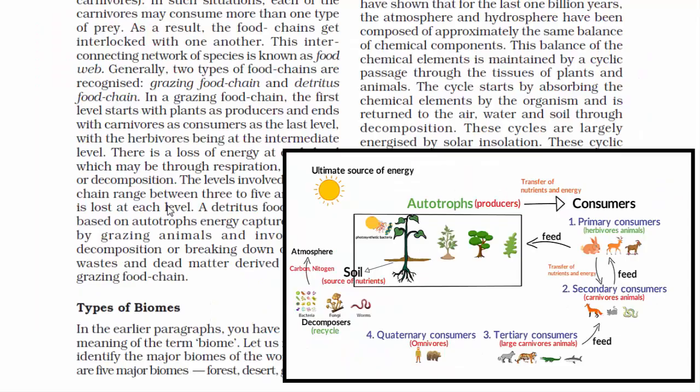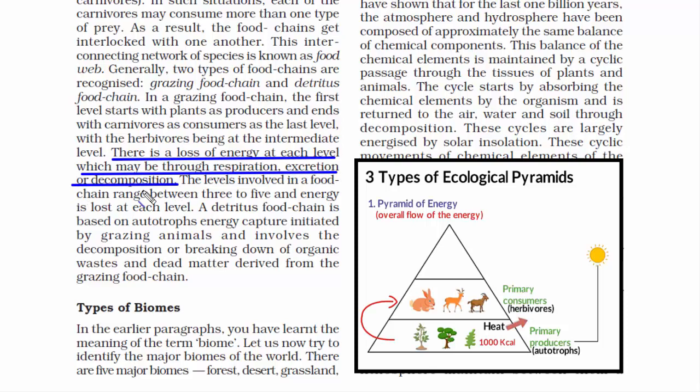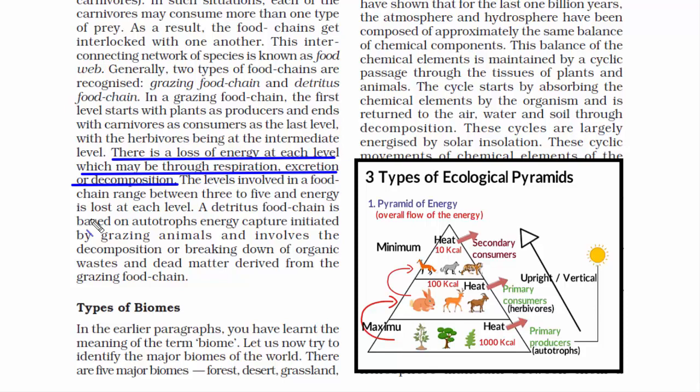When you look at the structure of the ecosystem, energy flows from one organism to another as organisms eat one another. However, there is also a loss of energy at each level through respiration, excretion or decomposition. After all, what goes in has to come out — so there is an inefficiency in the overall flow of energy between one organism and another.